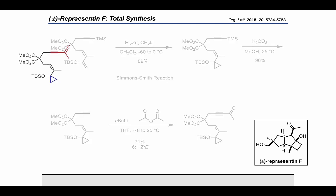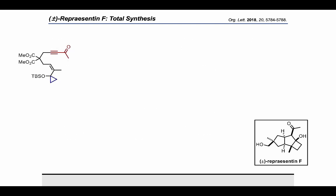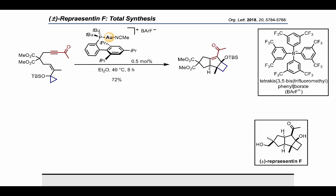With the desired cyclopropyl enyne substrate in hand, we performed the key step of the synthesis, the gold-catalyzed cyclization cascade. For this transformation, we identified the tert-butyl-XPhos gold complex with BArF counterion as the best catalyst. This catalyst allows the formation of the desired anti-fused tricyclic skeleton of the natural product in a single step in 72% yield using a remarkably low 0.5 mol percent of catalyst loading.